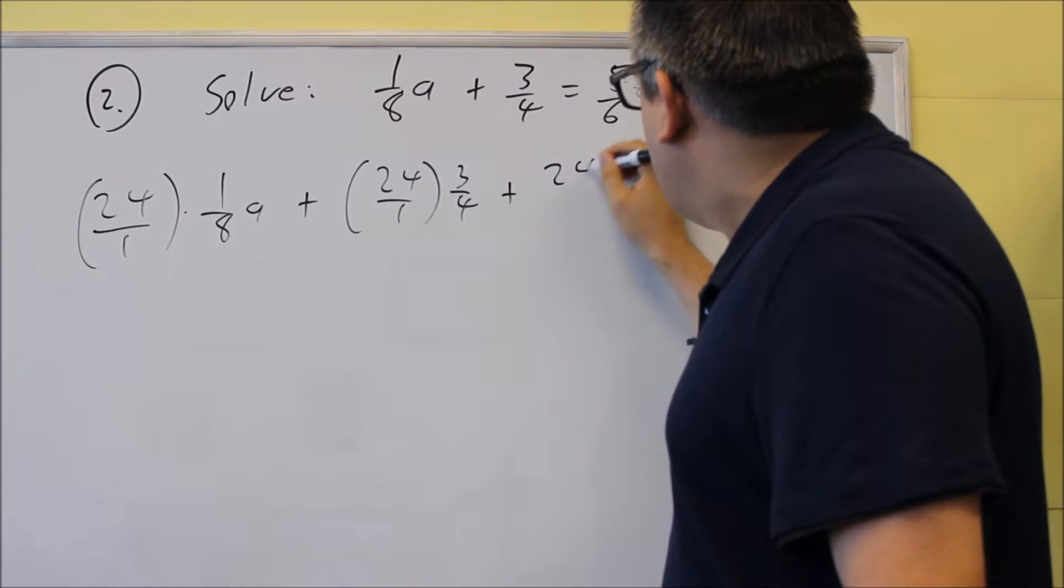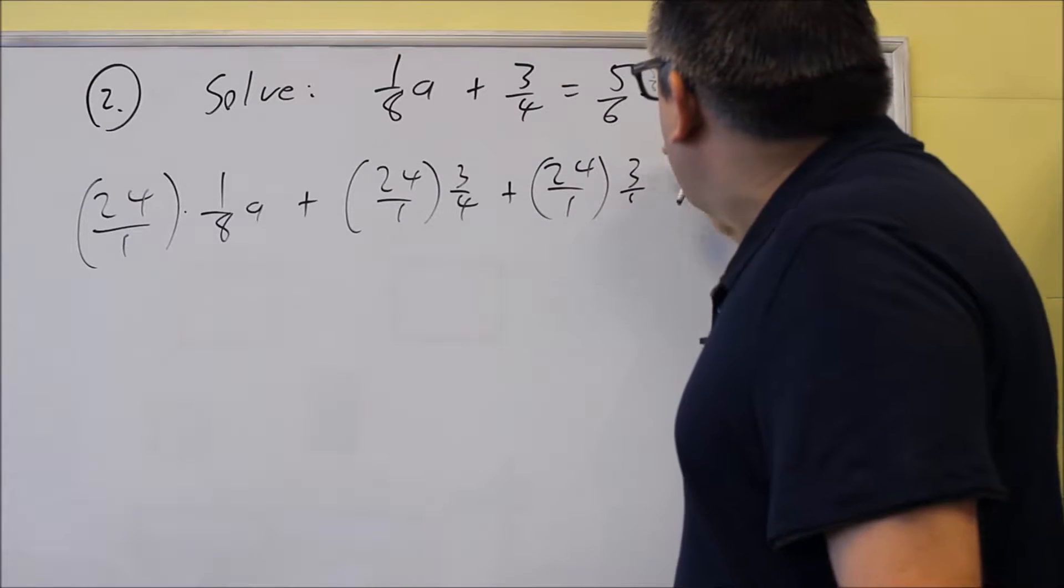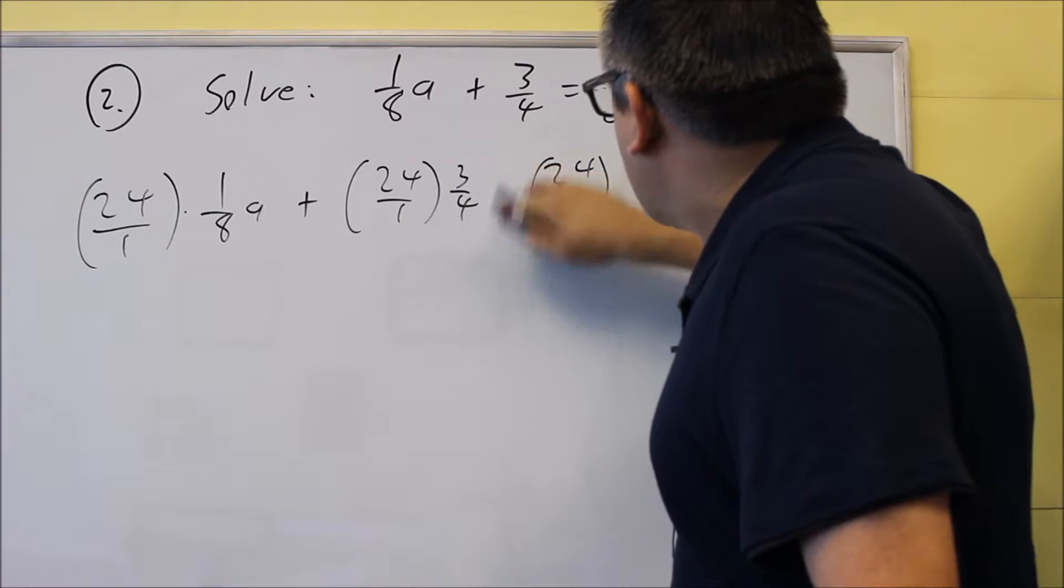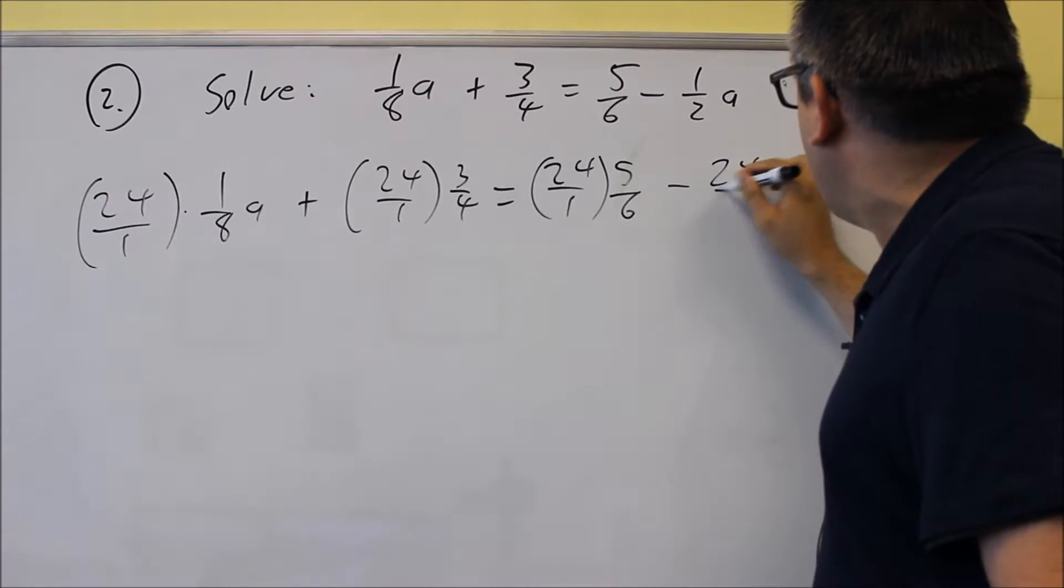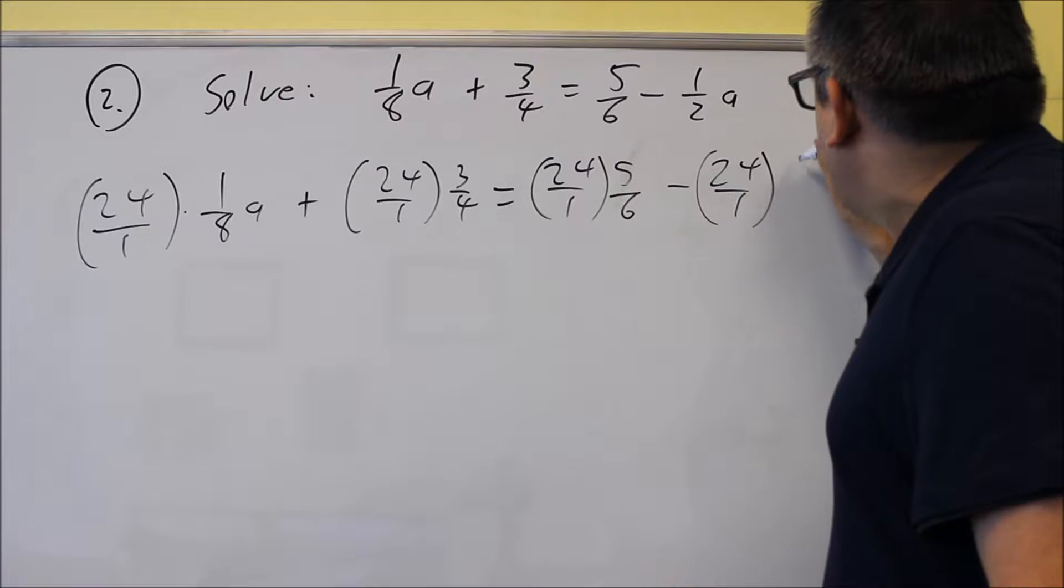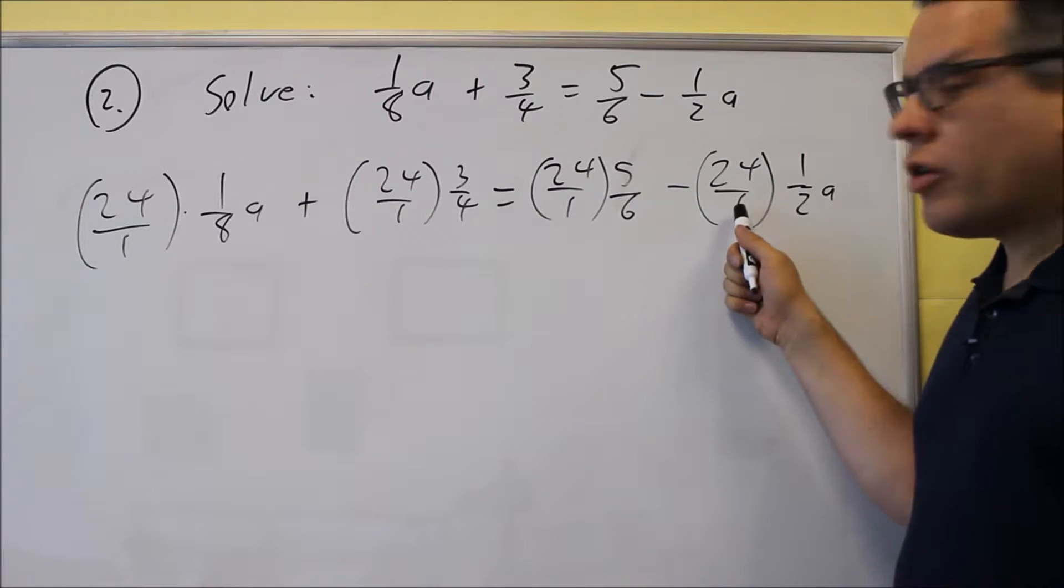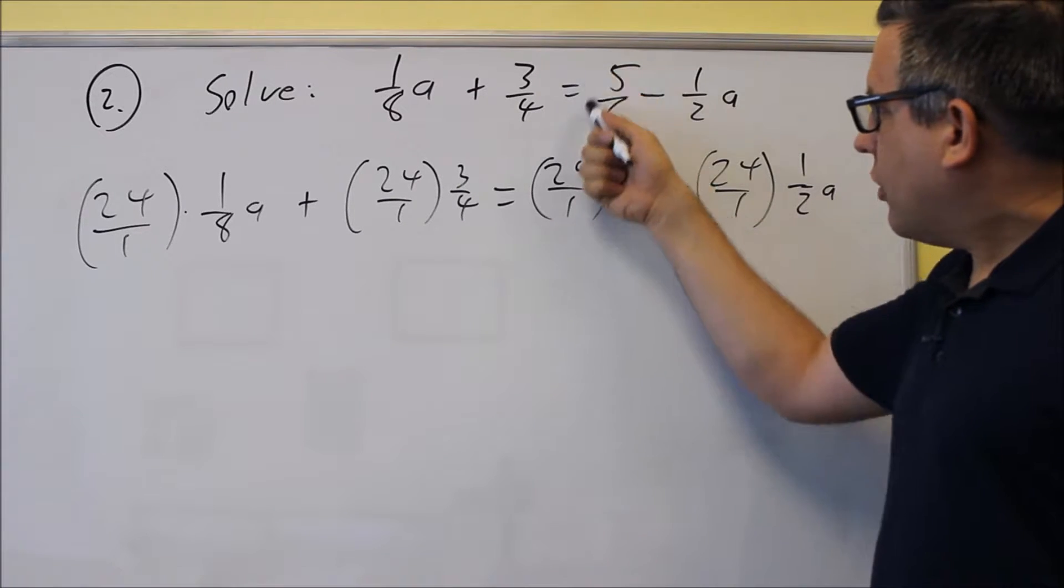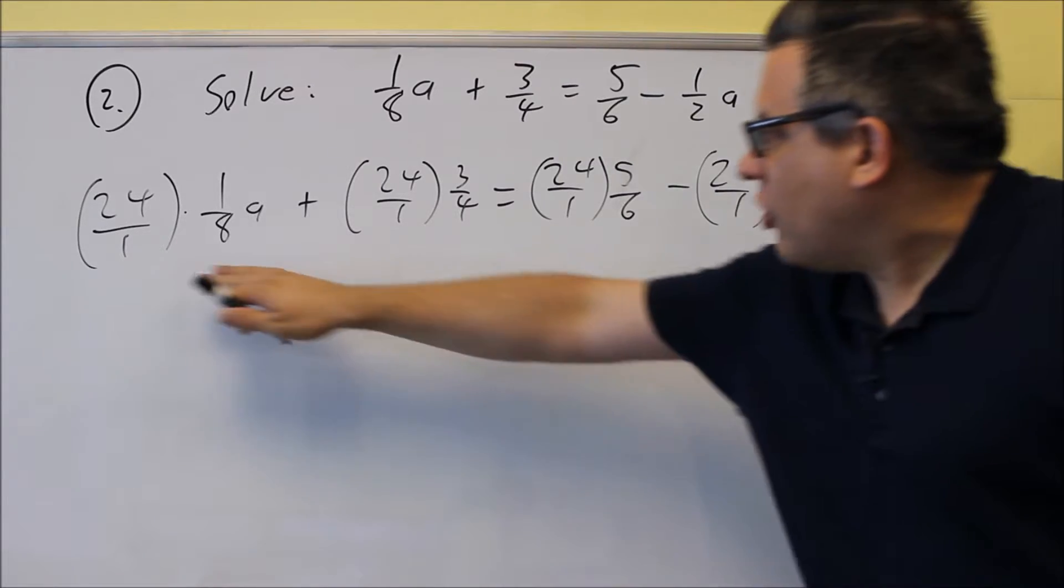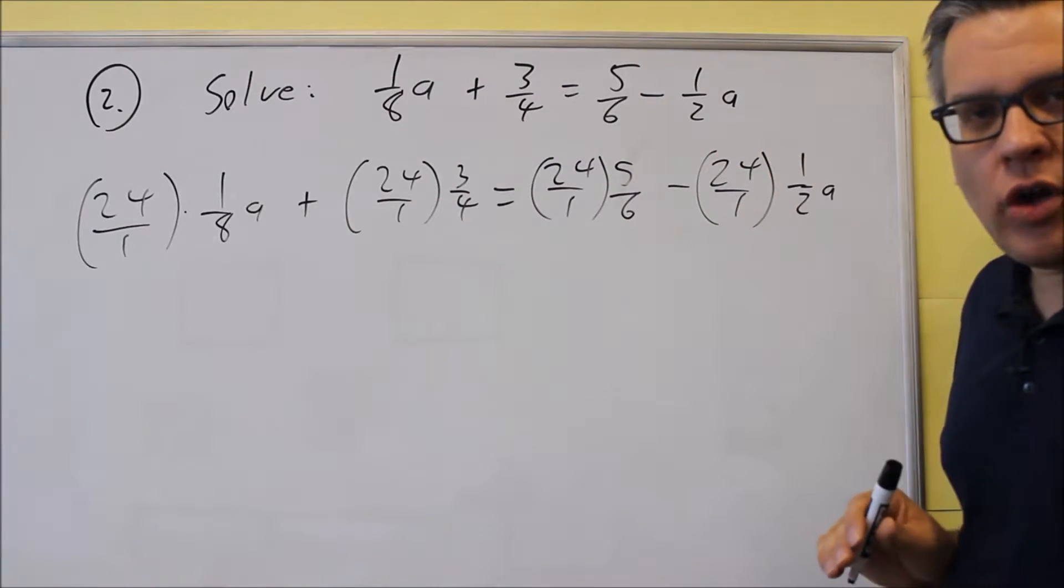So I'm just going to go ahead and put that next to each one. I've got the equal sign here, I've got the equal sign. So equals, this is five-sixths, and then minus twenty-four over one times the one-half a. Notice I'm putting the twenty-four after the minus sign here. You're just putting it in front of whatever number that you see here. So every single thing gets a twenty-four over one, we did that on both sides of the equation.